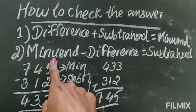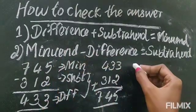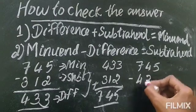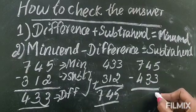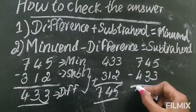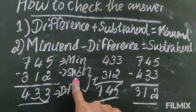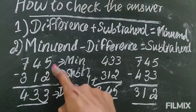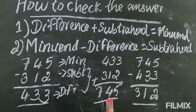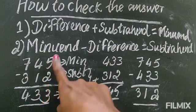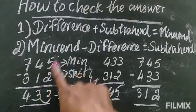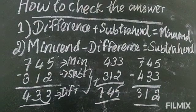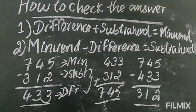In other way, from the minuend if you subtract the difference, you have to get the subtrahend. Let's check — the minuand is 745. From there you are subtracting the difference 433. 5 minus 3 is 2, 4 minus 3 is 1, 7 minus 4 is 3. So we have got 312, which is the subtrahend. So these are the two ways you can check your answer — first: difference and subtrahend, add them to get the minuend; second: minuend minus difference gives the subtrahend.